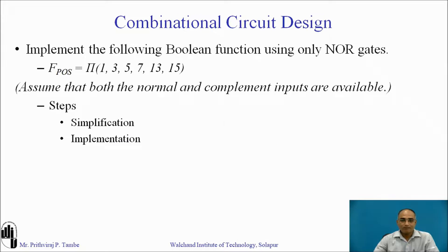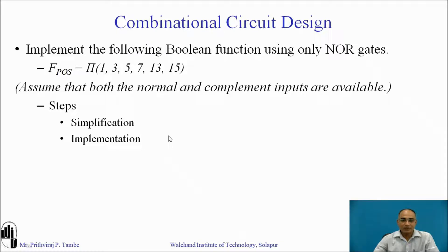Let us solve one more example — implementing a combinational circuit using only NOR gates. The max term information is provided: f(POS) = product of max terms 1, 3, 5, 7, 13, and 15. We assume both normal and complement inputs are available to avoid complexity. The two steps we follow are: first simplify the expression, then implement it. Since max terms are already provided, we simplify the expression directly.